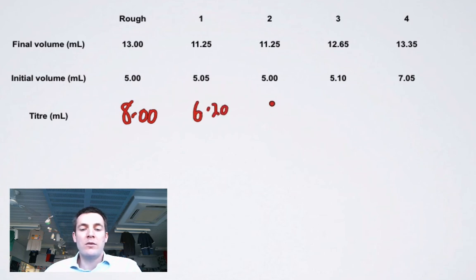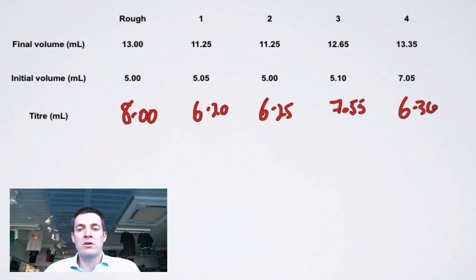What we're looking for when we do a titration is two or more titers that match to within 0.2 of a milliliter. So this one would be 6.25 milliliters, and we could stop there - we've got some consistent or concordant results. But we might choose to just do another couple. Maybe this one would be 7.55, and we might think, well, that's a bit different to the ones I've just done, so let's do this one as well, and that would be 6.30. At the end of it, once I've obtained these titers, I choose the ones that match and average them out.